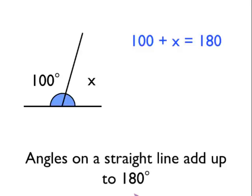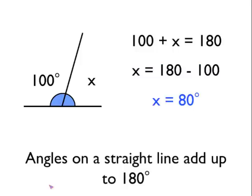Or another way of thinking about this would be to say that angle X must be 180 take away 100. So if we start with the 180 degrees and we take away 100, what we'll be left with is angle X. So angle X must be 80 degrees.